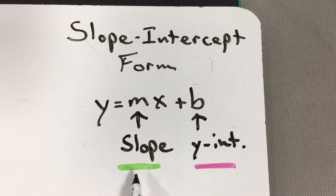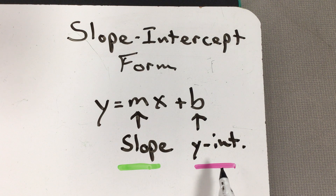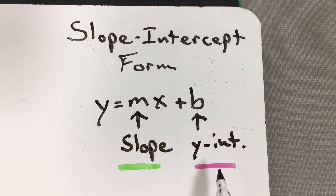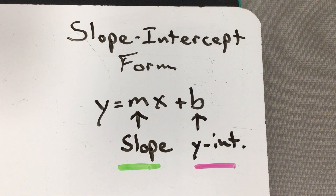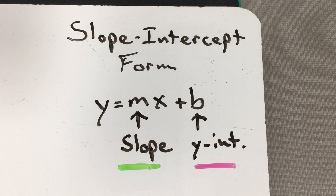We're going to go through some examples of what you might see on the first page of the packet, so if you ever get stuck just come back to this video. To help you out, wherever I see the slope I'm going to put it in green, and the y-intercept I am going to put in pink.